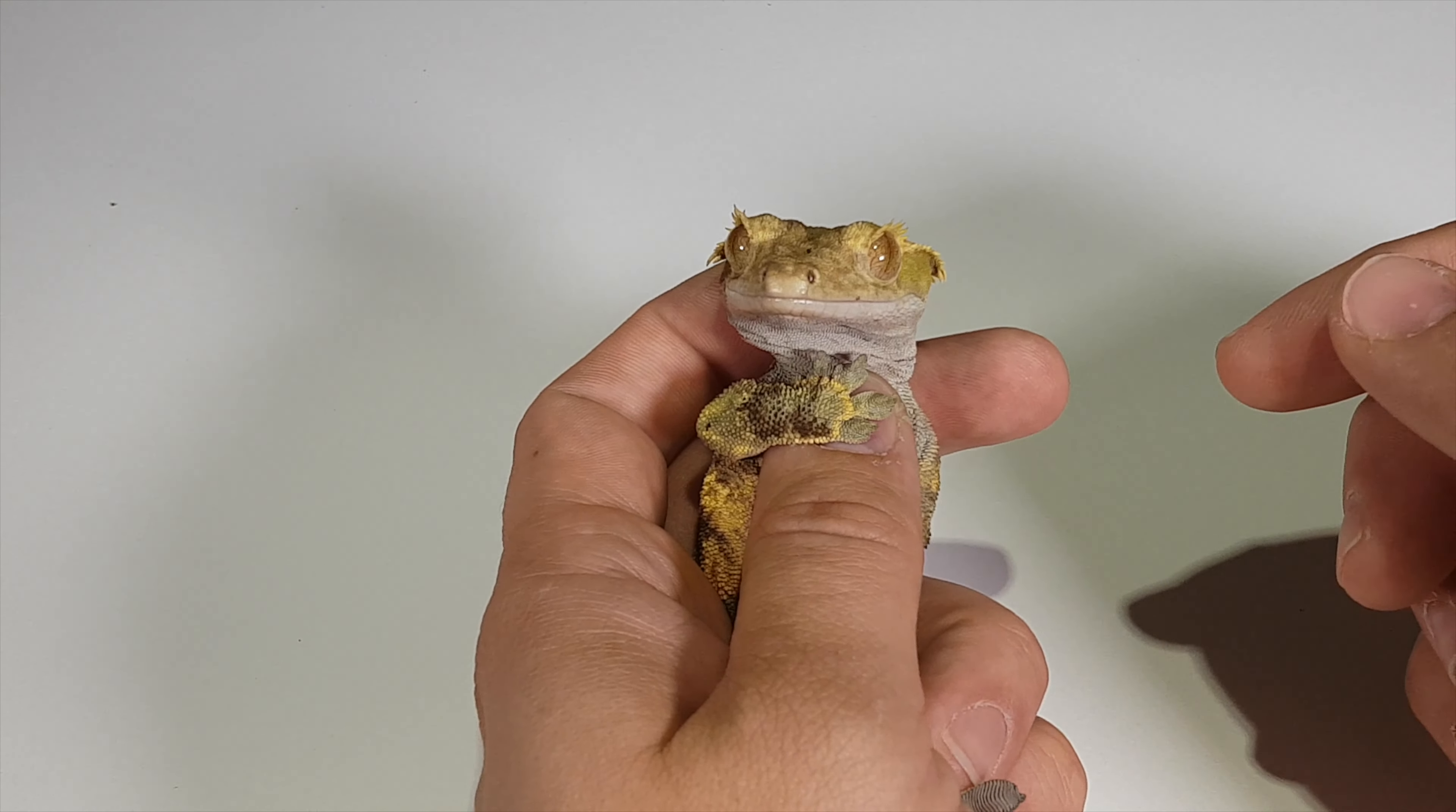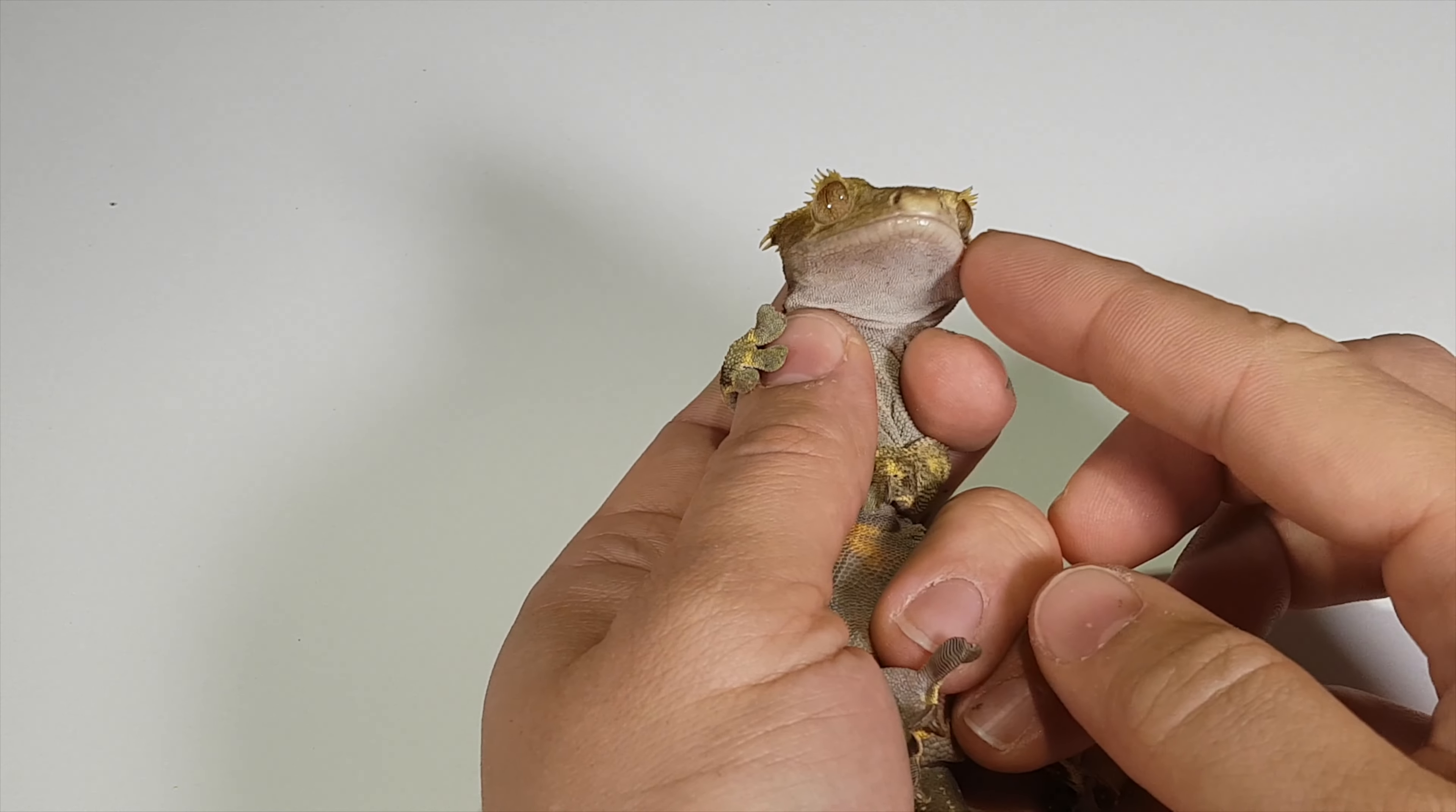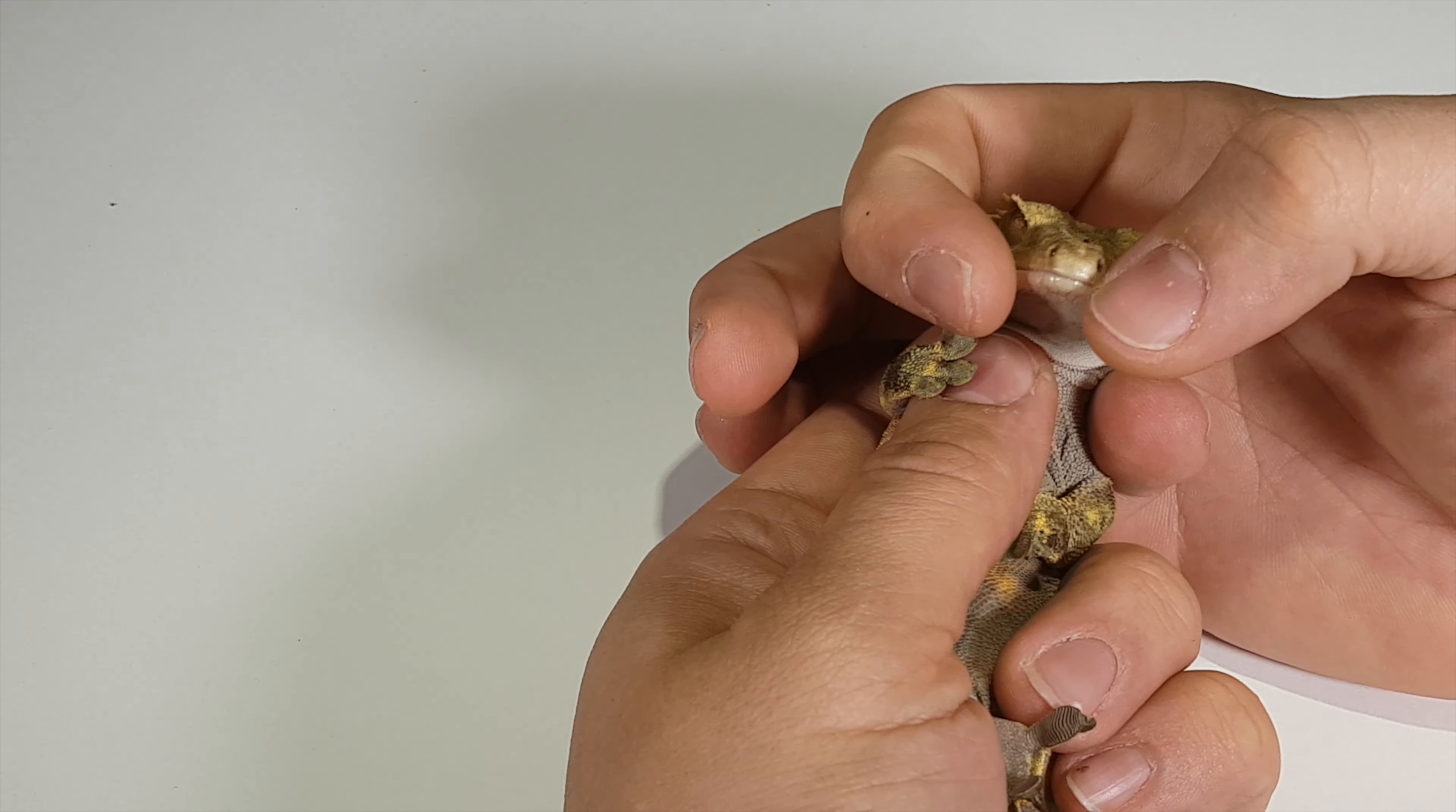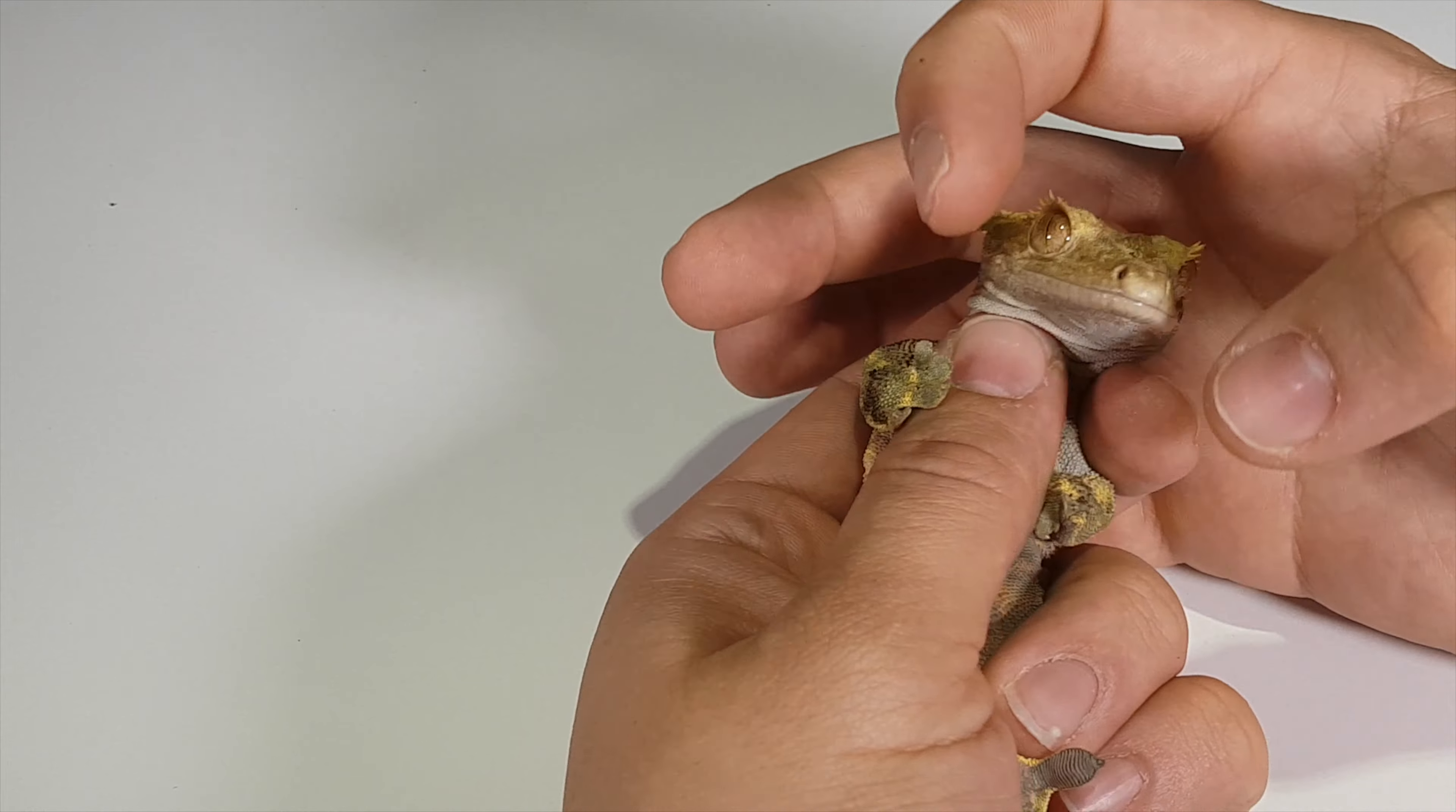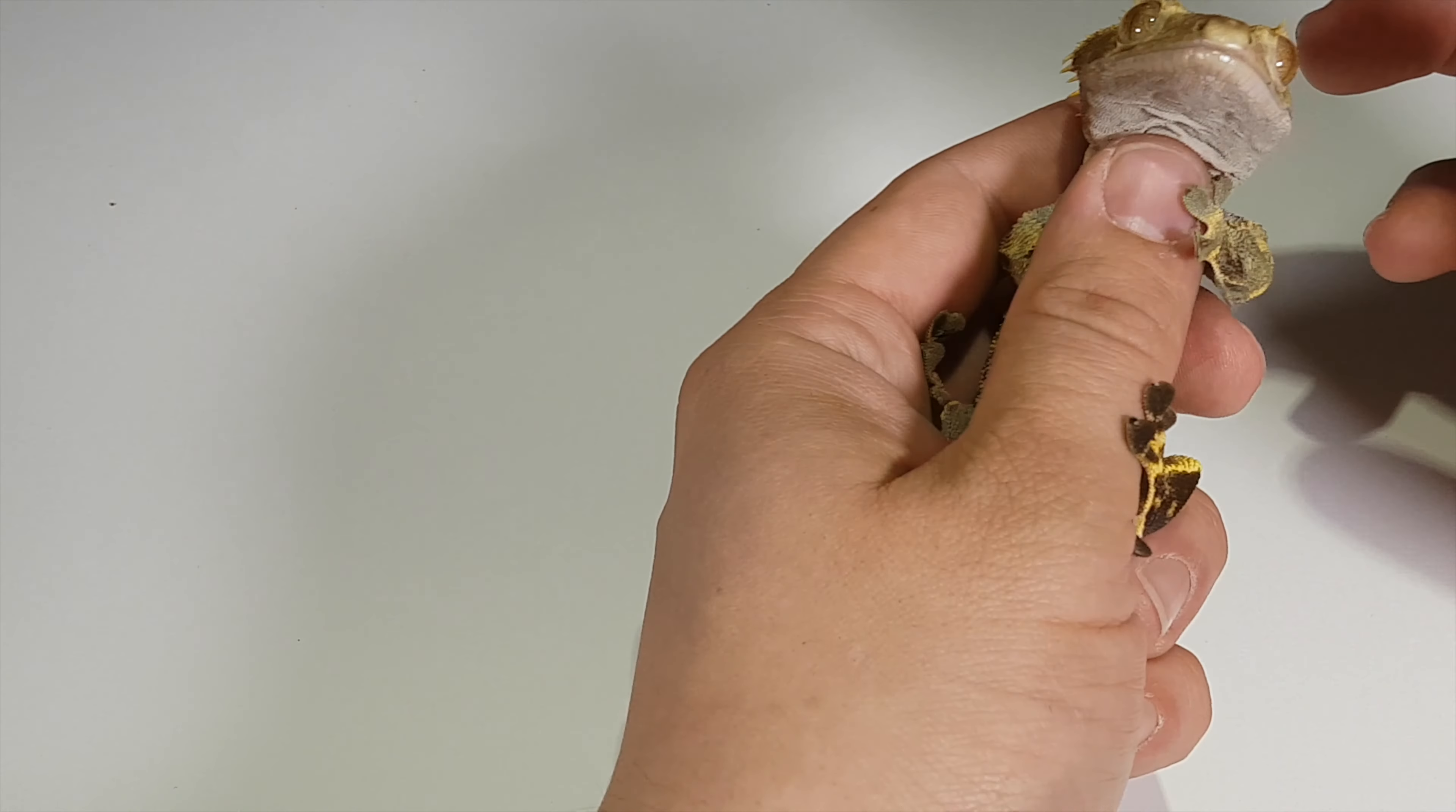The way I like to check for their calcium sacs is I just start rubbing on the sides of their mouth. It kind of pisses them off, tap, tap, tap, you need to readjust.